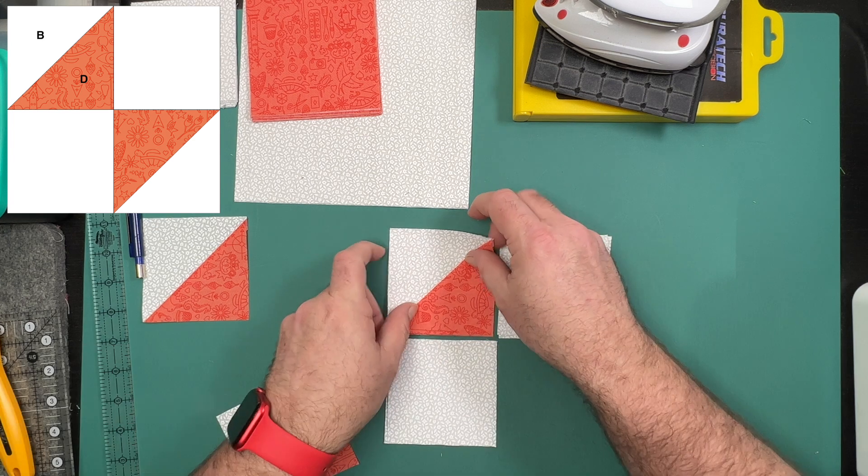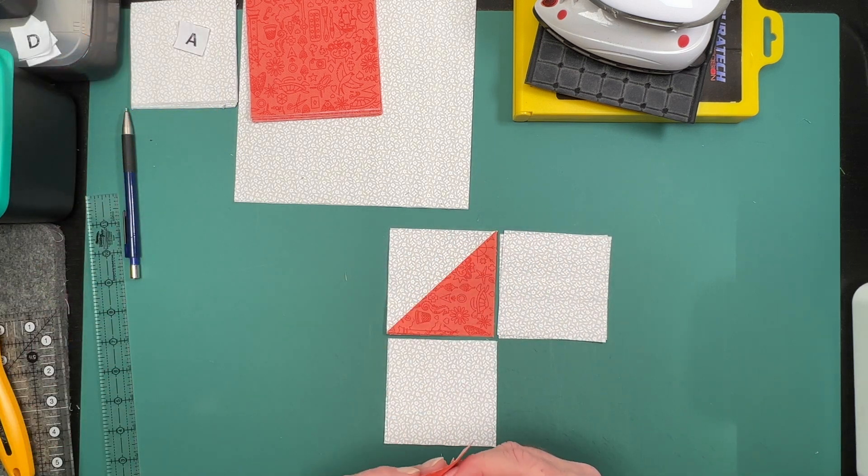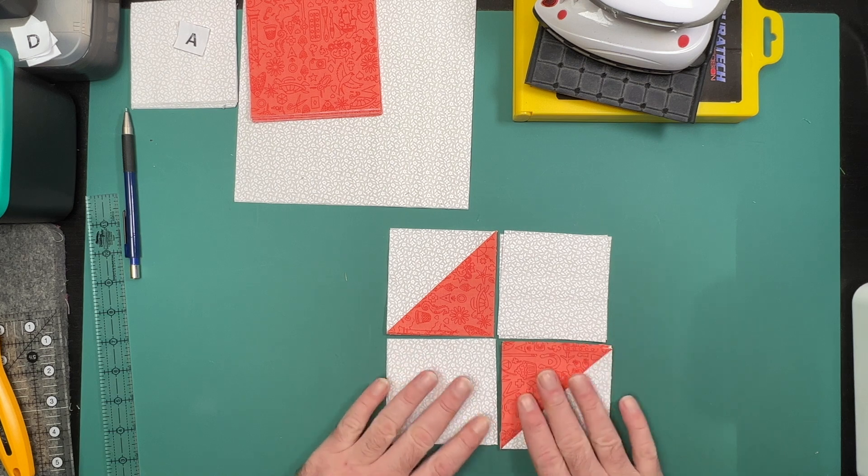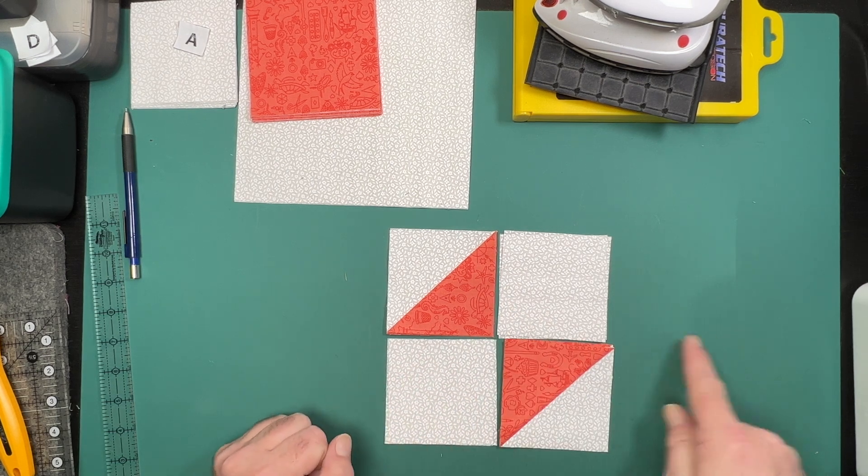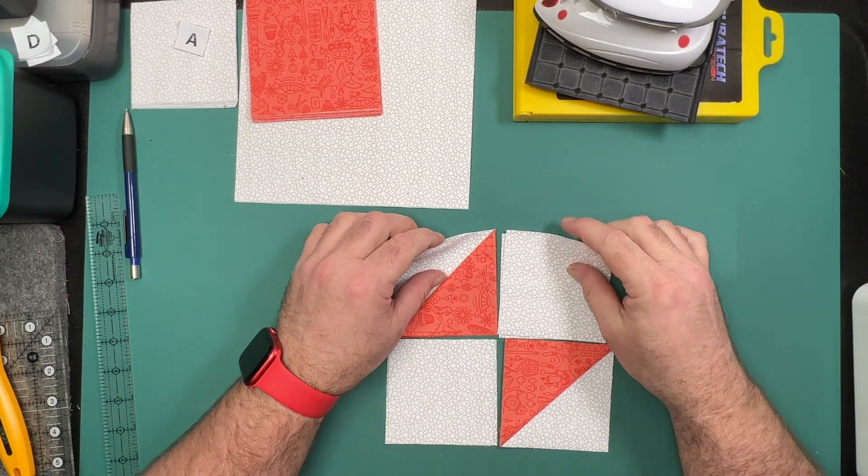We'll sew this together by first doing our two vertical seams and then our horizontal seams. In both cases for the vertical seams we will press towards the solid square, and then once we've done our horizontal seam we will spin that center intersection.